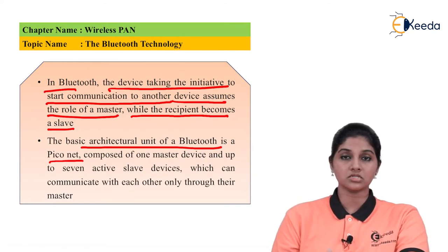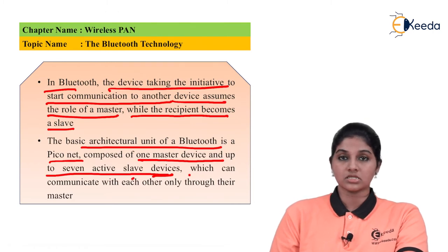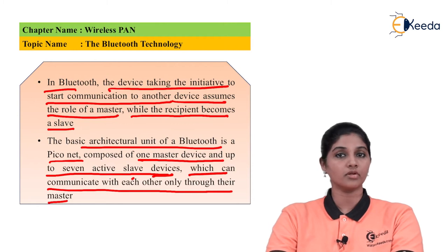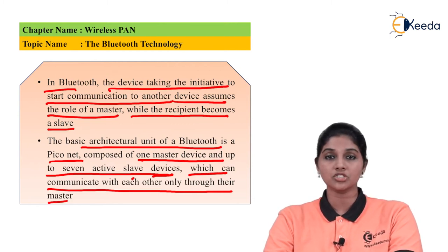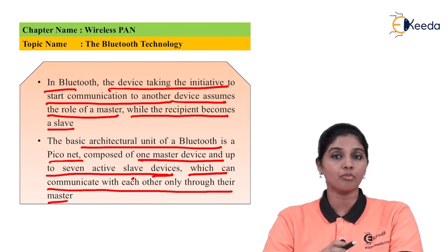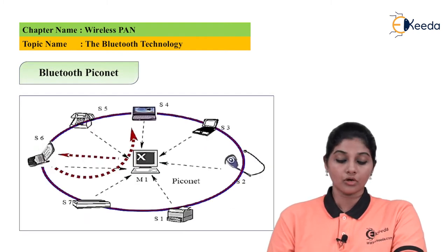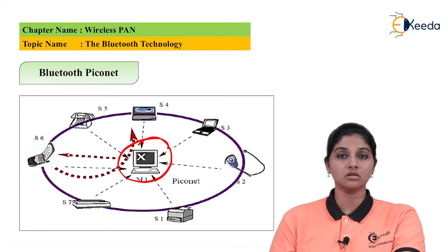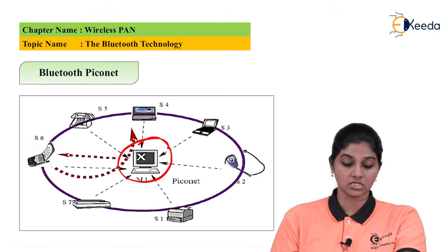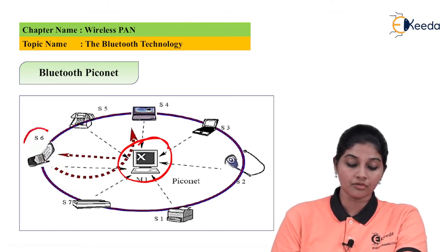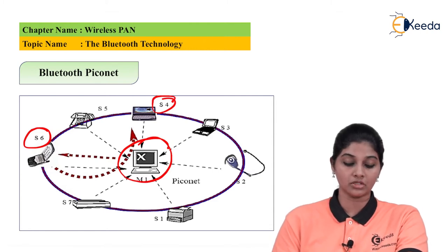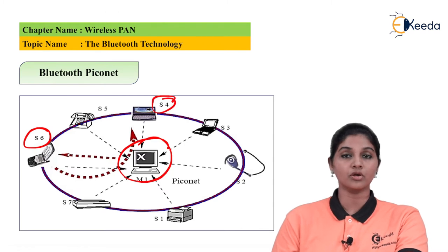In a Piconet, one master device and up to seven active slave devices can communicate, but slaves can communicate with each other only through the master. Here, in the diagram, m1 is the master and s1 through s7 are the slaves. If slave s6 wants to communicate with slave s4, there is no direct link — s6 must communicate through the master, which then relays the communication to s4.